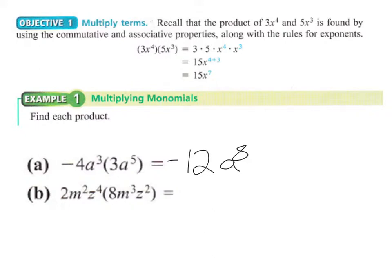Looking at the second example, we have 2 and 8 to multiply together, giving us 16. We have m squared and m cubed, so we add the 2 and 3 to get m to the fifth. Then we also have z to the fourth and z squared, so adding 4 and 2 gives us z to the sixth.